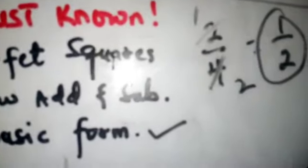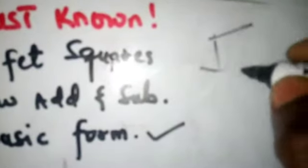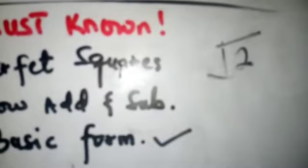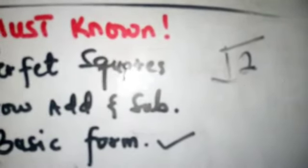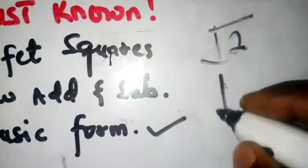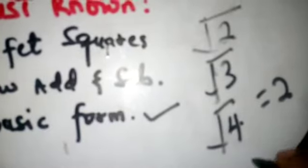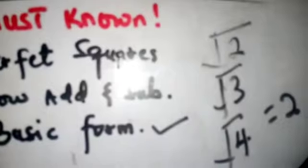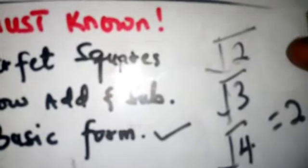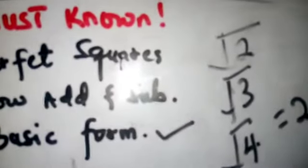The simple form of a surd is when you cannot do anything about it anymore. For example, root 2 — you cannot expand or simplify root 2 any further. Root 3 is the same. But root 4 gives you 2, so it is not in basic form. The basic form relates to prime numbers — starting from 2, 3, 5, and so on. Square roots of prime numbers give us the basic form.